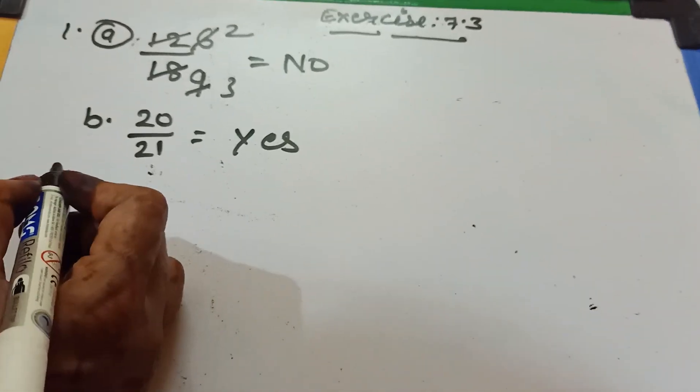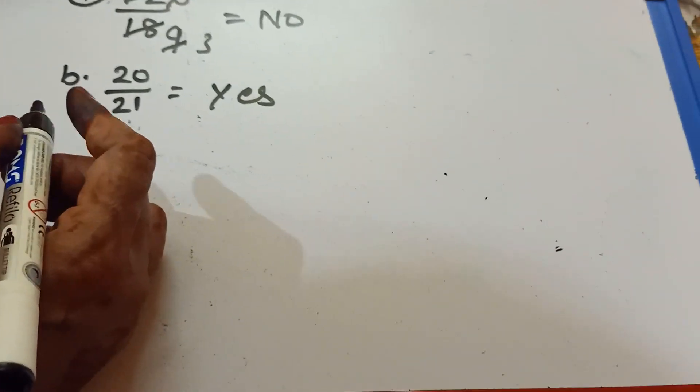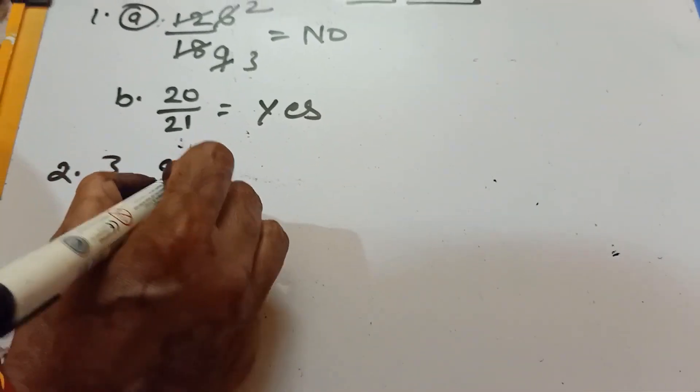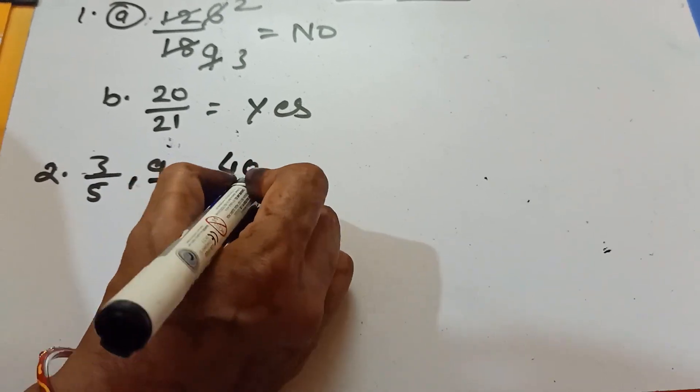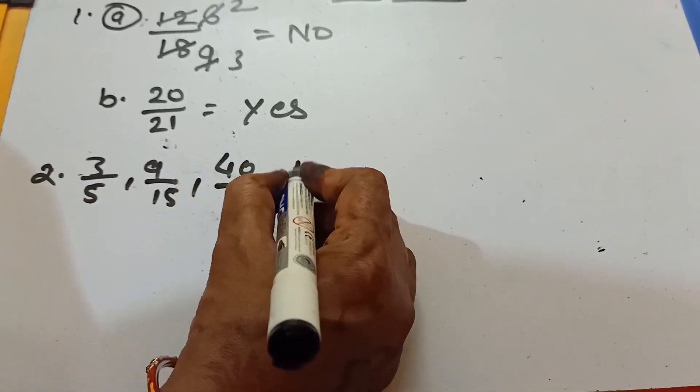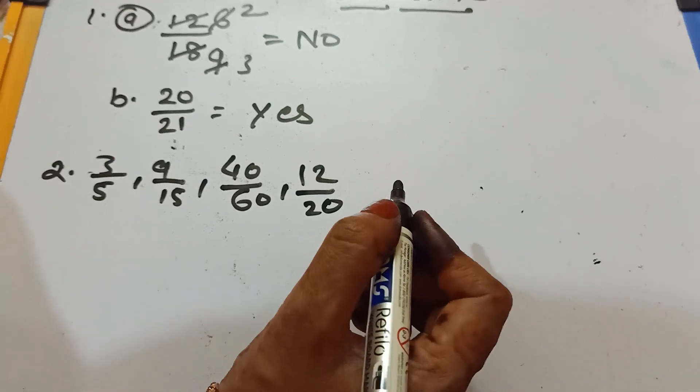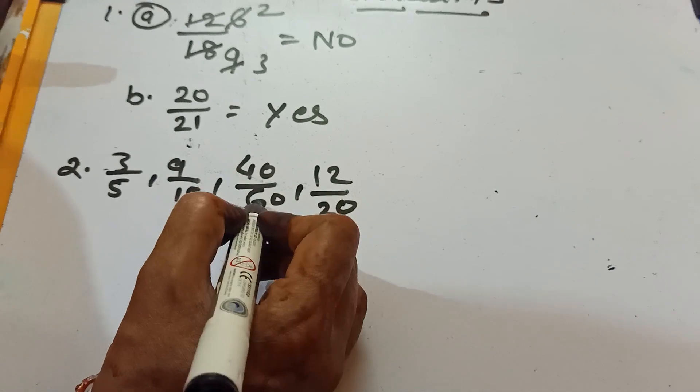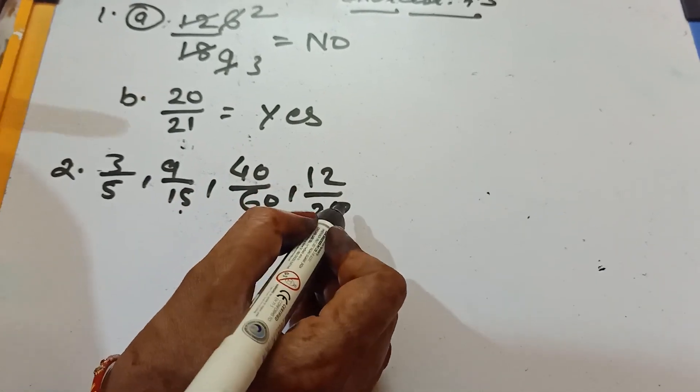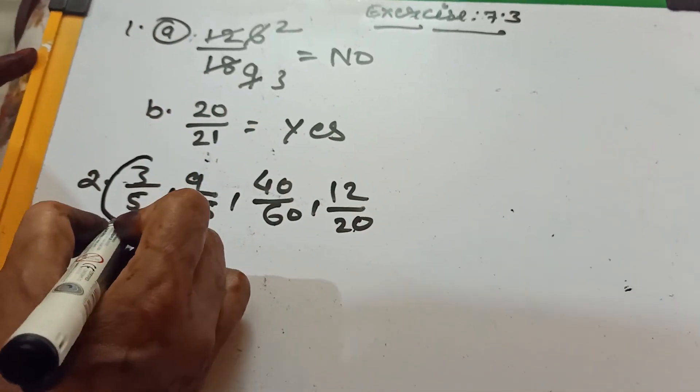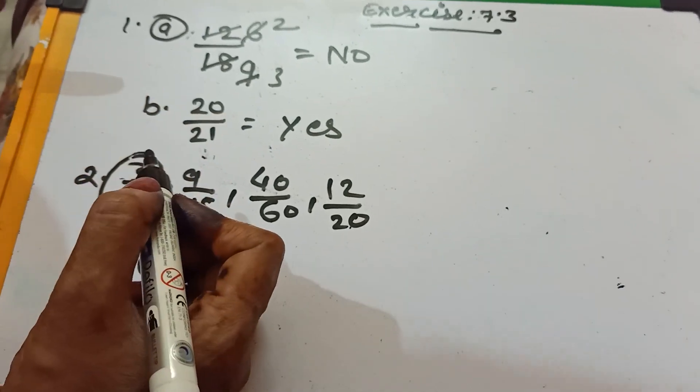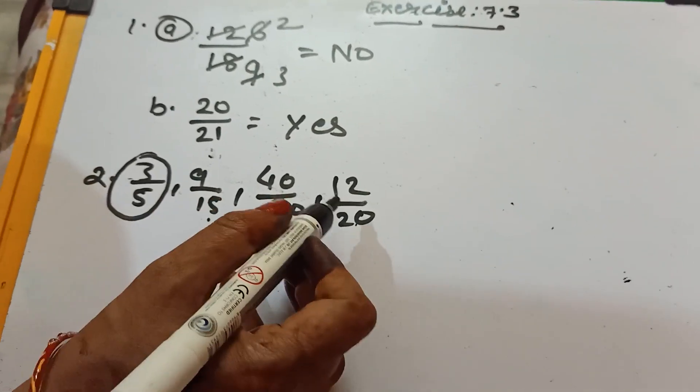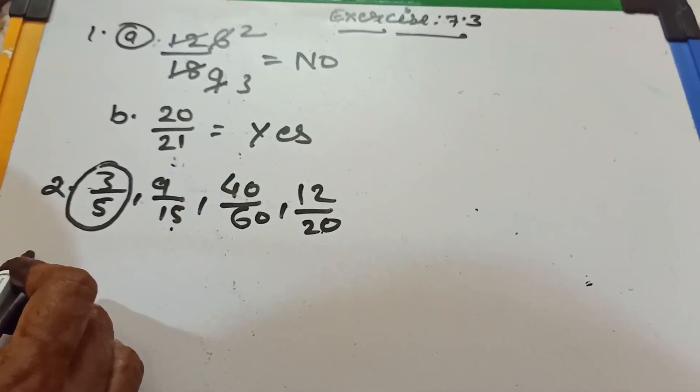Now in question number 2. The question is encircle the fraction which is in its lowest term. 3 by 5, 9 by 15, 40 by 60, and 12 by 20. Children you see, you can divide 9 by 15, 40 by 60, 12 by 20. Only one number is left that we can't divide both numbers with same number. It is 3 by 5. The lowest term in this group is 3 by 5.